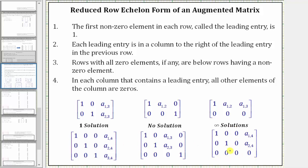Each of these matrices are in reduced row echelon form, which means: number one, the first non-zero element in each row, called the leading entry, is one; number two, each leading entry or one is in a column to the right of the leading entry in the previous row; three, rows with all zero elements, if any, are below rows having a non-zero element; and number four, in each column that contains a leading entry or one, all other elements of the column are zeros.